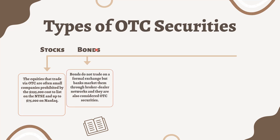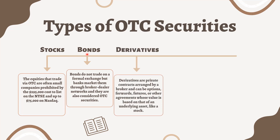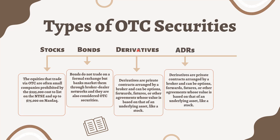Bonds do not trade on a formal exchange, but banks market them through broker-dealer networks, and they are also considered OTC securities. Derivatives are private contracts arranged by a broker and can be options, forwards, futures, or other agreements whose value is based on that of an underlying asset like a stock.